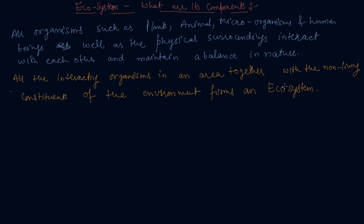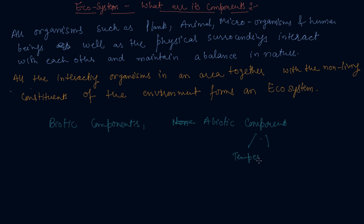So students, this is what the ecosystem is. An ecosystem consists of biotic components comprising living organisms such as human beings and animals, and abiotic components comprising physical factors like temperature, rainfall, wind, soil, and minerals.